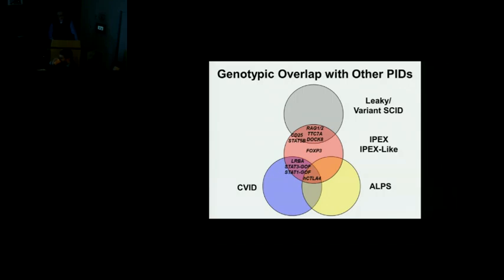A question was also raised about whether there are patterns that predict who will do well with bone marrow transplant — I'll come back to that in the treatment section. We've now transplanted 15 patients with IPEX here in Seattle.